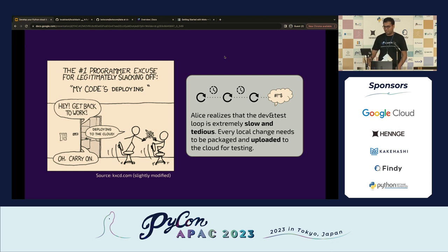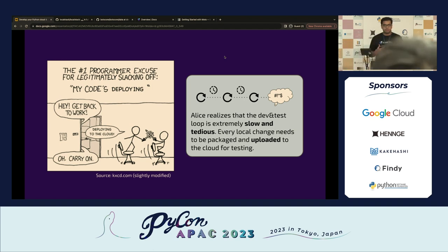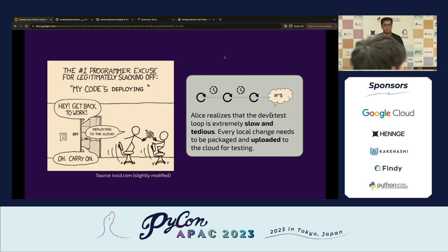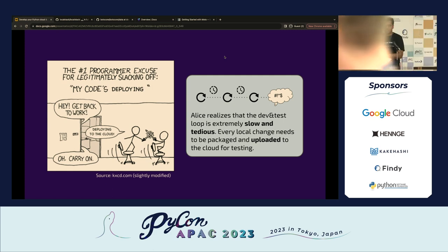When she hits the deploy button, this is when things start getting interesting. You're waiting seconds, minutes, maybe even hours just to deploy a sample copy of your application. That's actually a legitimate excuse — 'I'm deploying my application to the cloud.' The whole dev and test loop on public cloud — AWS, Azure, GCP — is very, very slow and tedious. As a developer, you just want to run a few commands and see what's happening.